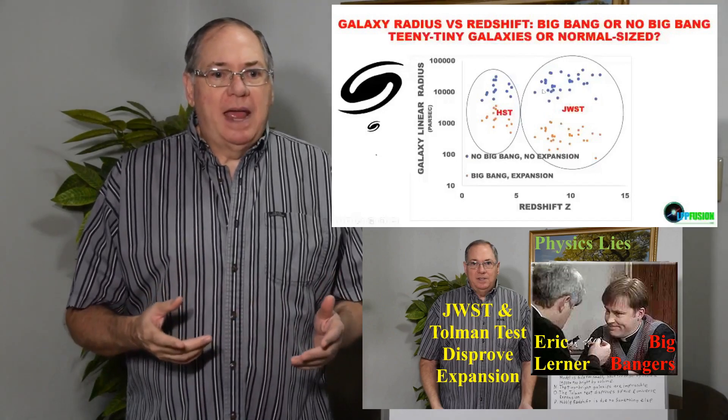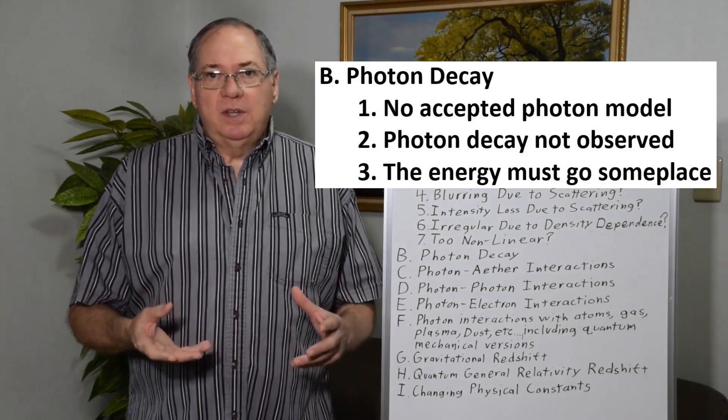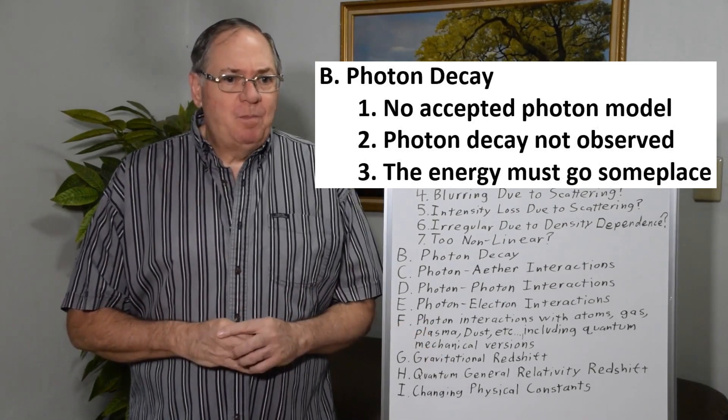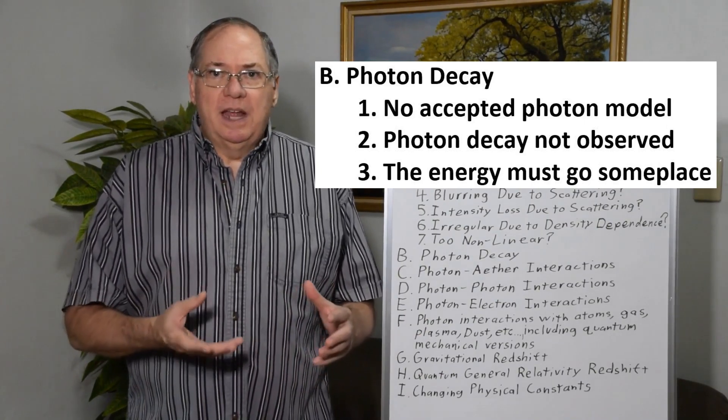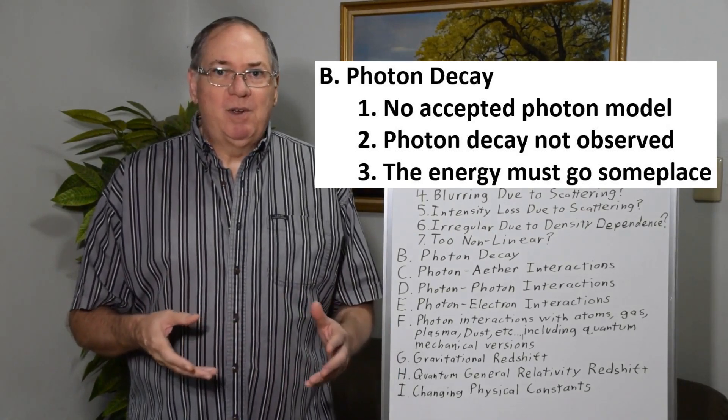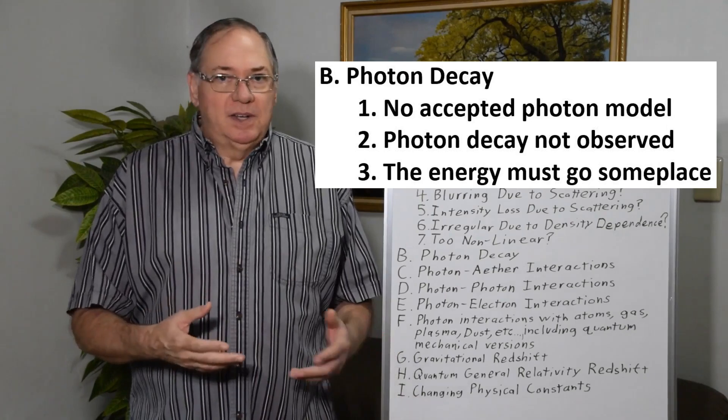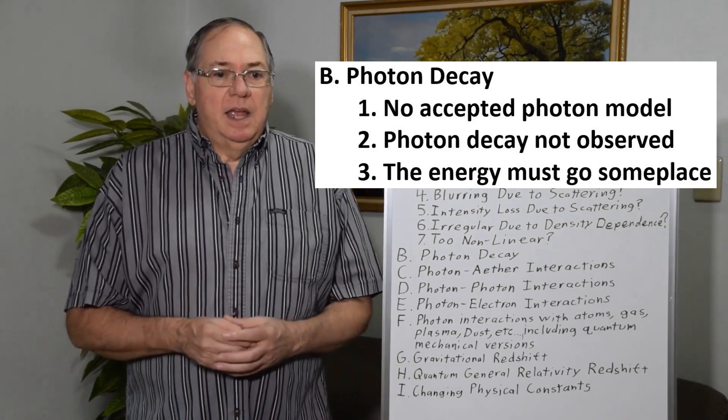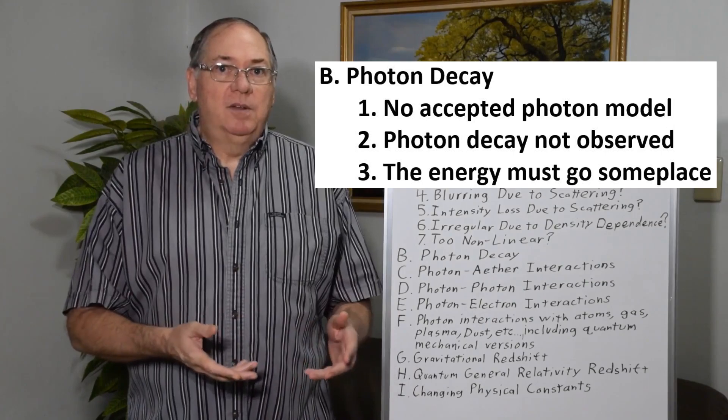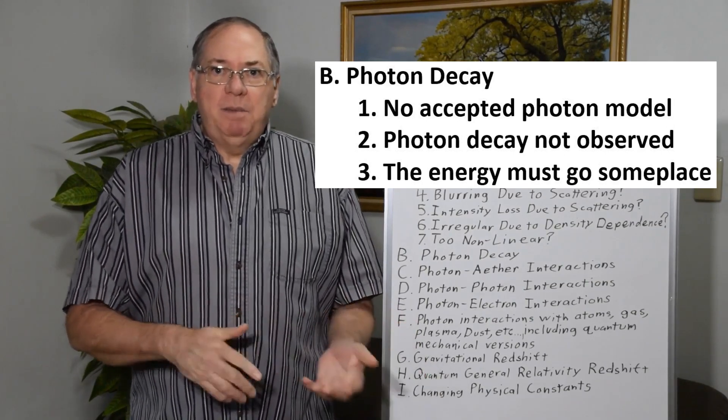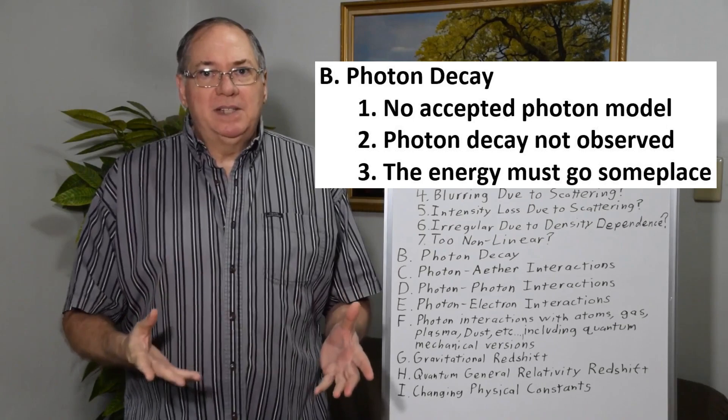And with that background, I can go into the types of models. The first big group is photon decay, where photons spontaneously lose energy as they go. First of all, this isn't known to happen in experiments on Earth and there isn't a good mechanism for that. In fact, the standard model generally requires that photons don't lose energy. So it's inconsistent with our experiences and observations and general physics. If photons are decaying and losing energy, that energy has to go someplace, so you have to have a model for the energy going someplace, which actually puts it into one of the other models. So there's usually something missing from photon decay models.